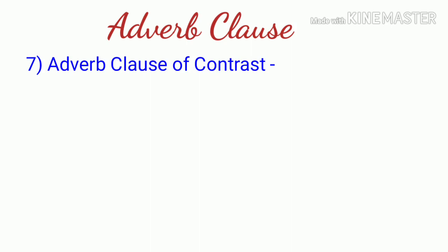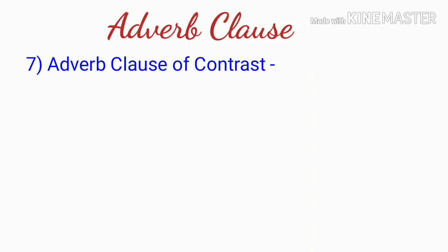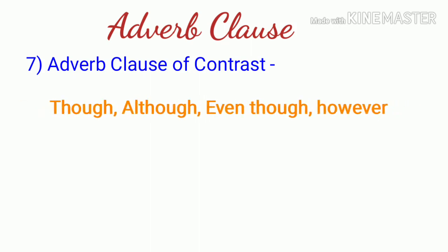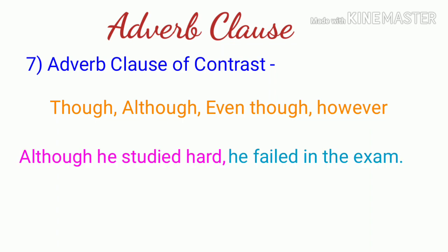The next type is adverb clause of contrast, also called adverb clause of concession. It shows a contrast or virodha bhas with what is stated in the main clause. These clauses begin with conjunctions such as 'though,' 'although,' 'even though,' 'however.' For example: 'Although he studied hard, he failed in the exam' - meaning even though he studied hard, he failed.